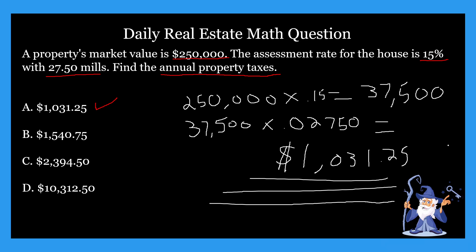Let's recap briefly on what we did here. For property tax problems, first you need to find the assessed value — you take the assessment rate and multiply it by the market value. Then once you have the assessed value, you calculate using the mill rate. You convert the mills by moving three decimal places, since mills stands for milli, which is three. Then you multiply the assessed value by the converted mill rate to get the annual property tax of $1,031.25. That's a basic annual property tax problem.